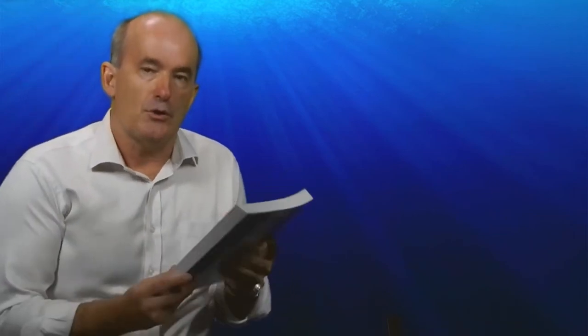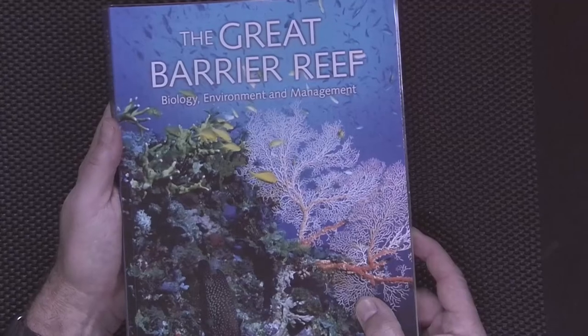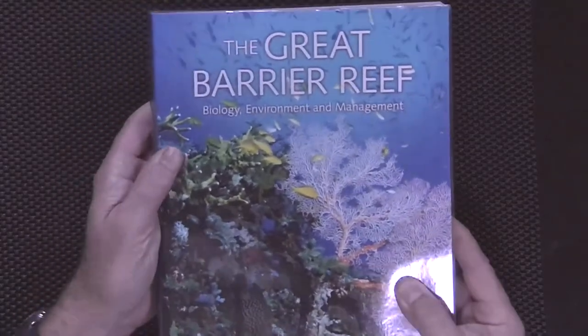We've also provided you with a free textbook which will provide important background reading to the lectures and activities that you'll be exposed to as part of the course. This book, The Great Barrier Reef: Biology, Environment and Management, uses the Great Barrier Reef region as an example by which to explore tropical coastal ecosystems.